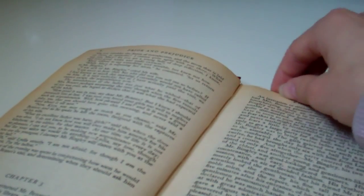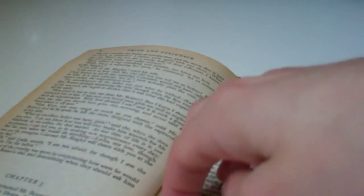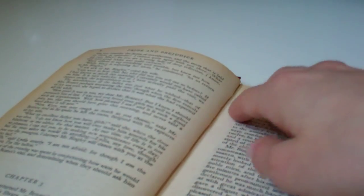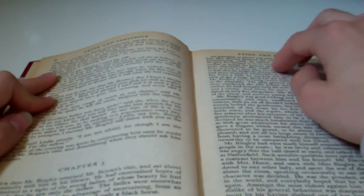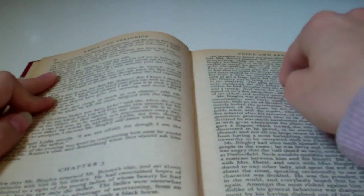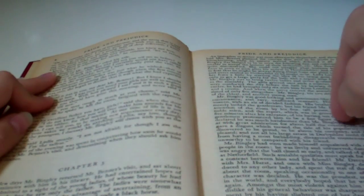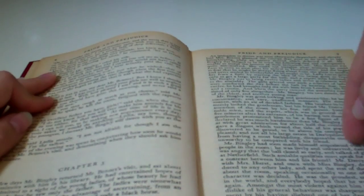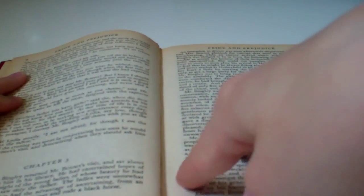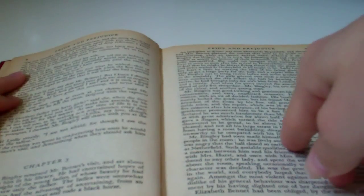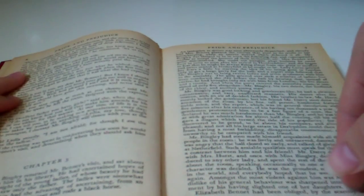The rest of the evening was spent in conjecturing how soon he would return Mr. Bennet's visit and determining when they should ask him to dinner. In a few days, Mr. Bingley returned Mr. Bennet's visit and sat about ten minutes with him in his library. He had entertained hopes of being admitted to a sight of the young ladies, of whose beauty he had heard much, but he saw only the father. The ladies were somewhat more fortunate, for they had the advantage of ascertaining from an upper window that he wore a blue coat and rode a black horse.